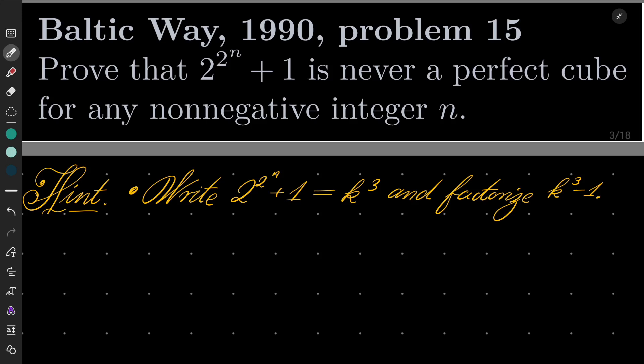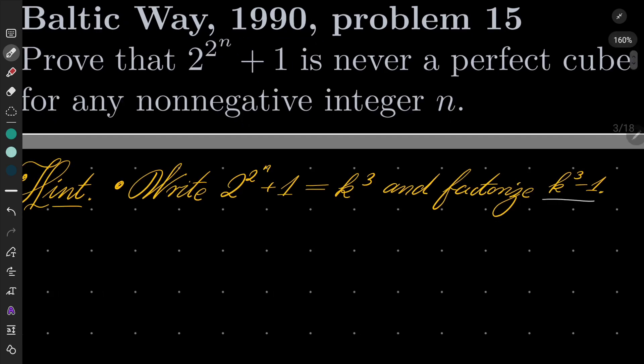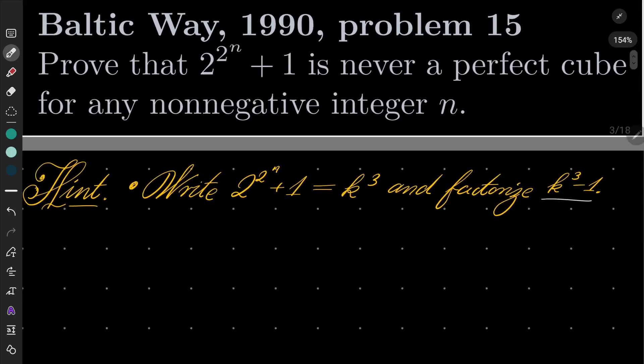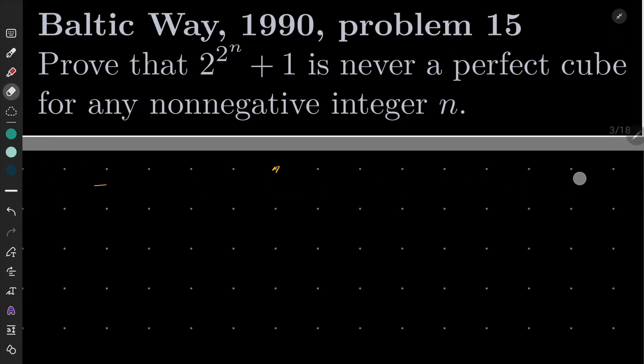So it's a pretty basic problem. Just write our number as a perfect cube and factorize k cubed minus 1. You should get a contradiction at some point. I'll give this problem a try and I will see you in a minute.